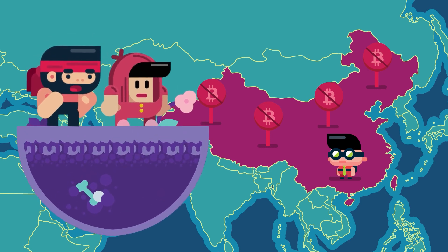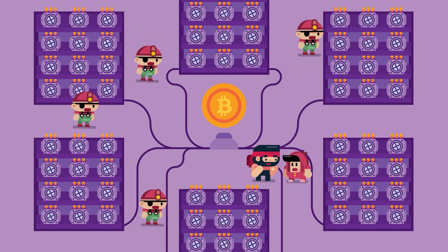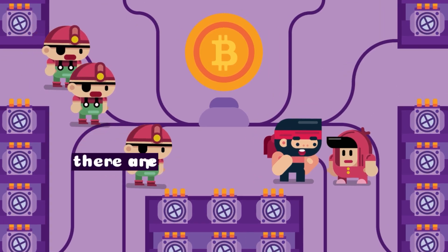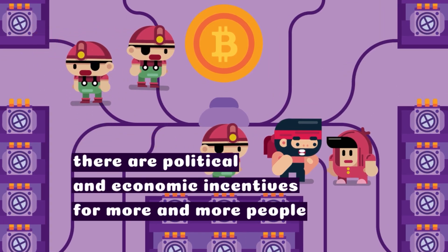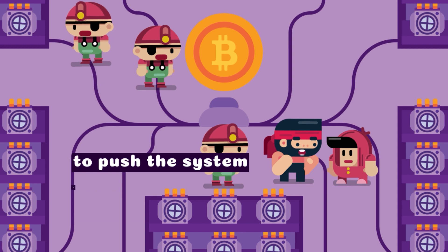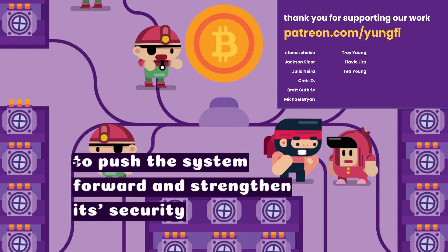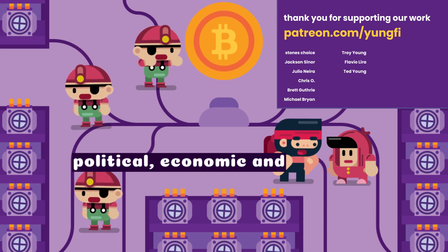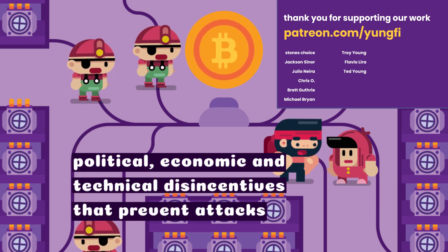With all of this speculation about hacking Bitcoin, people forget to ask — why hasn't Bitcoin been hacked already? Because it's better to just mine instead. Yes. There are political and economic incentives for more and more people to push the system forward and strengthen its security. At the same time, there are also strong political, economic, and technical disincentives that prevent attacks.